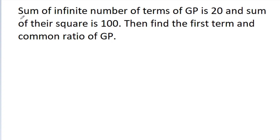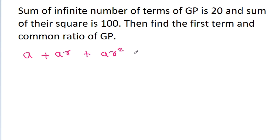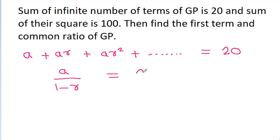In this video, we have given that the sum of an infinite number of terms of a GP is 20 and the sum of their squares is 100. We have to find the first term and common ratio of the GP. The sum of infinite terms of GP — a, ar, ar², ... — is equal to a/(1-r), which equals 20. Suppose this is equation 1.